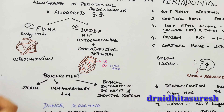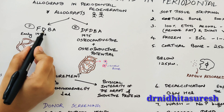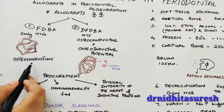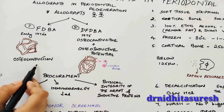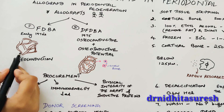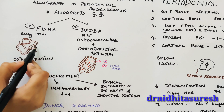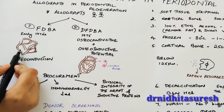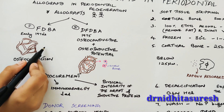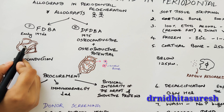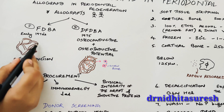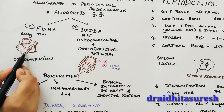FDBA works on the principle of osteoconduction, meaning it presents itself as a scaffold into which cells would migrate and form new bone.